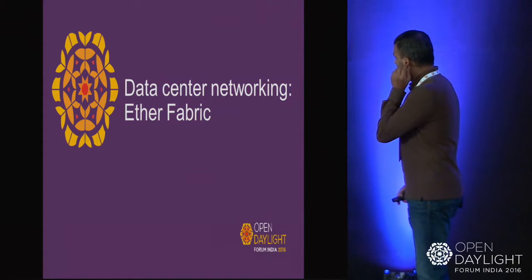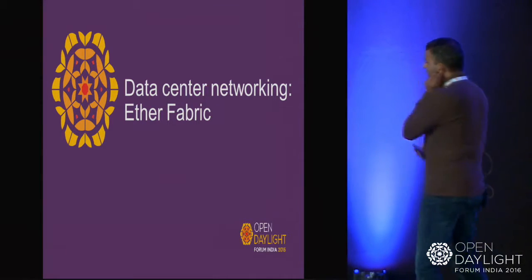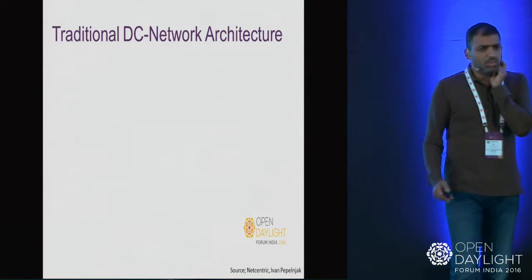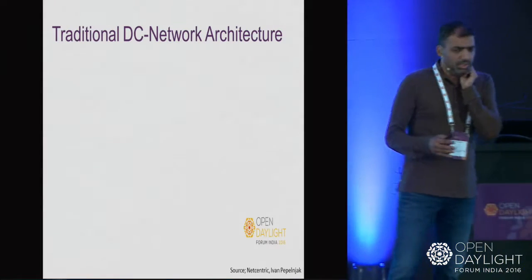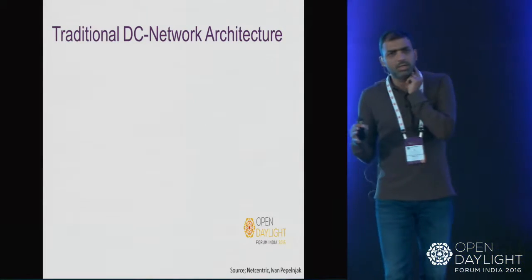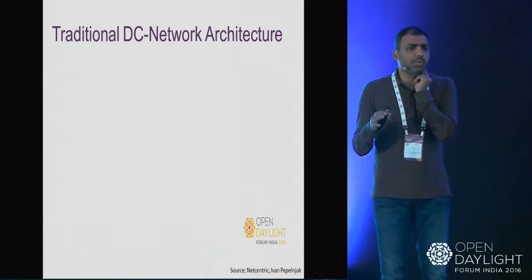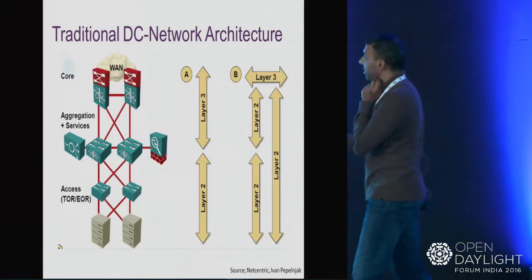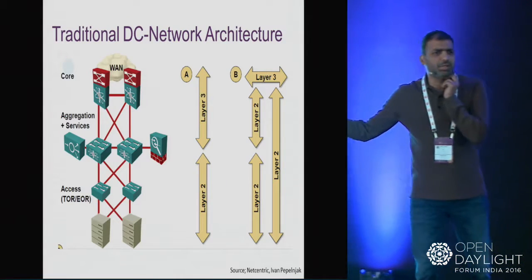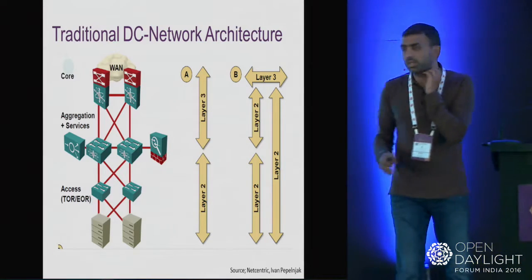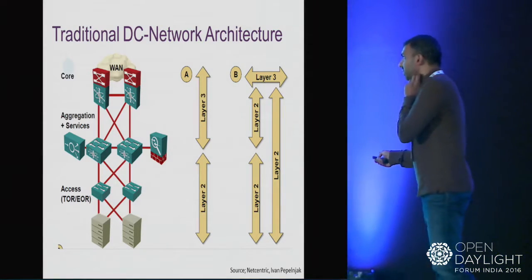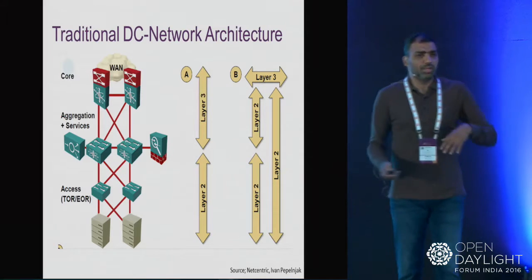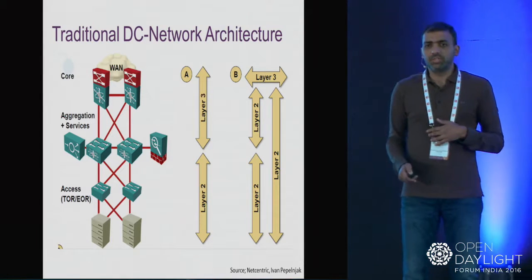Before moving on to cloudifying the central office, I want to spend some time on the Ethernet fabric or data center fabric, because most of the solutions you'll see — especially in NFV domain — use the fabric architecture in their underlay network, rather than the traditional data center network architecture. The traditional architecture had VMs, access switches, aggregation switches, and core switches — running L2 or L3 depending on which level of switches.